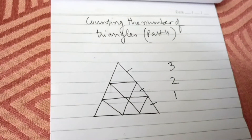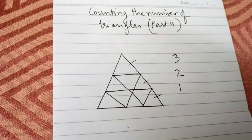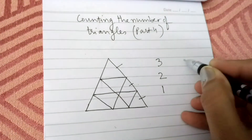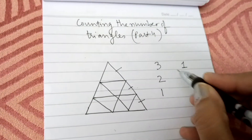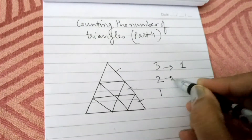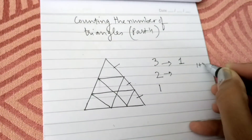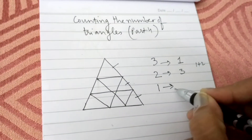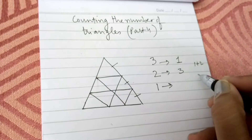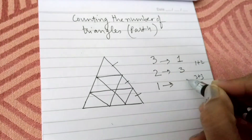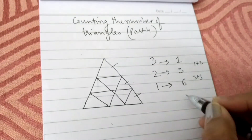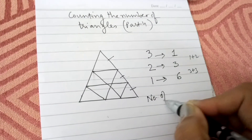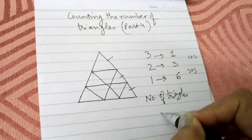Step 2: in front of 3 you write down 1, in front of 2 you write down 1 plus 2, that is 3, and in front of 1 you write down 3 plus 3, that is 6. Now this is the last step — the number of triangles.